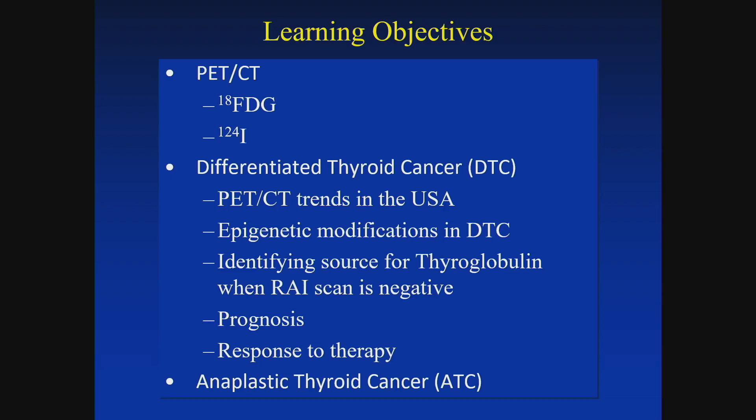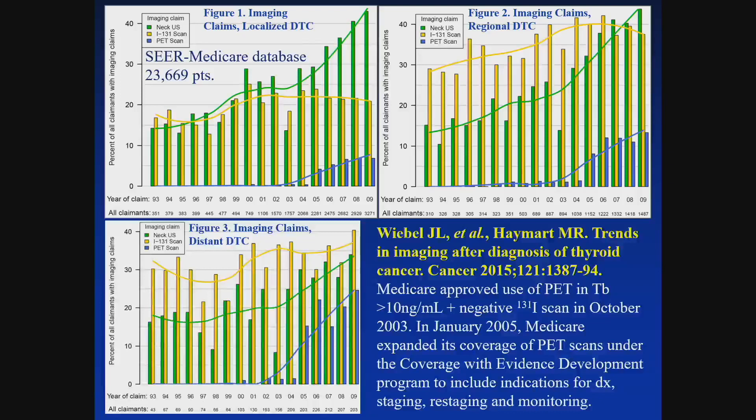We will look at differentiated thyroid cancer, PET-CT trends in the United States, epigenetic modifications in differentiated thyroid cancer, and identifying the source for thyroglobulin in those who have negative iodine scans — which is where we employ this modality the most. We will briefly touch on anaplastic thyroid cancer, which is rare but does have a certain role that we really need to be aware of.